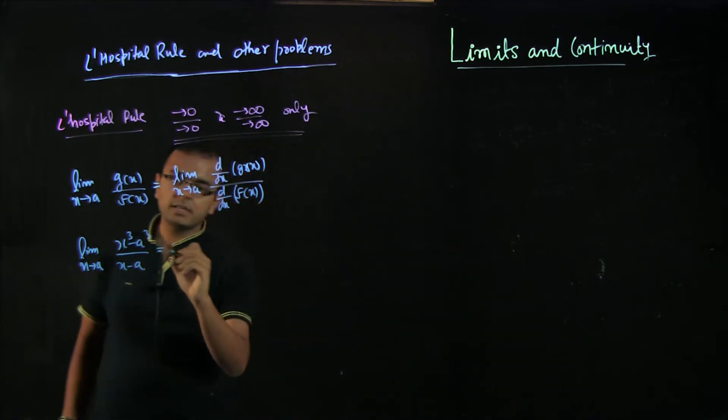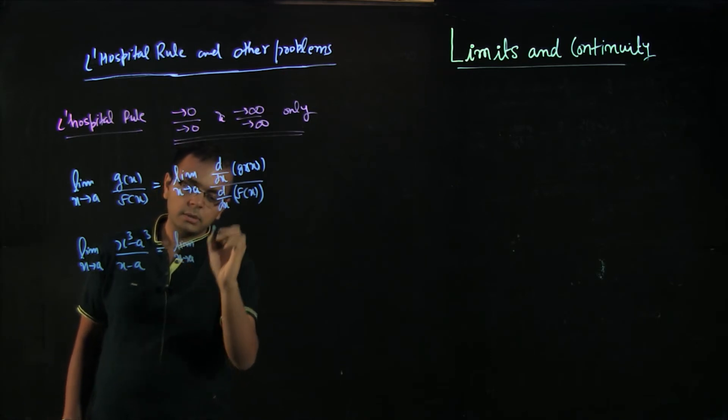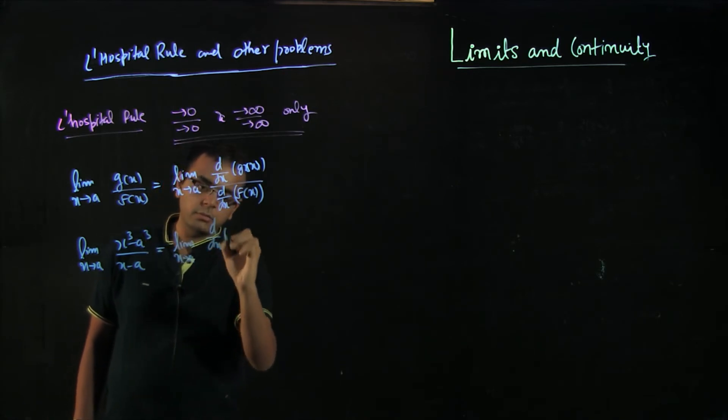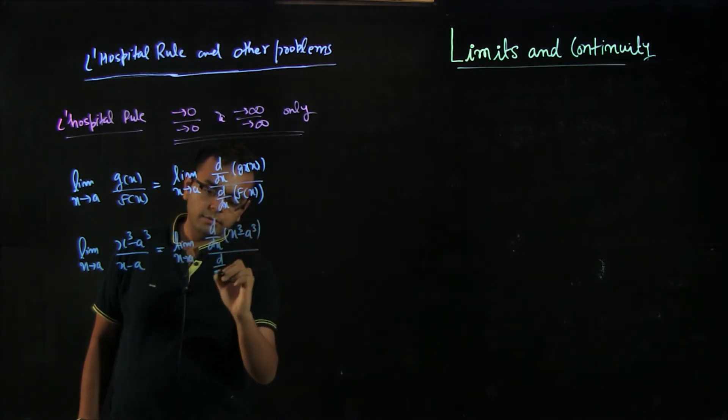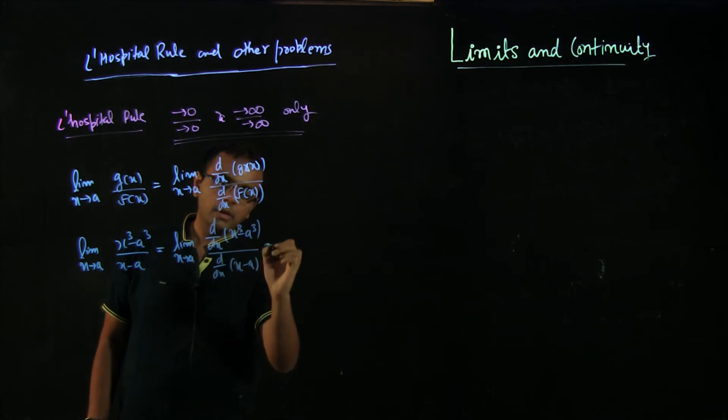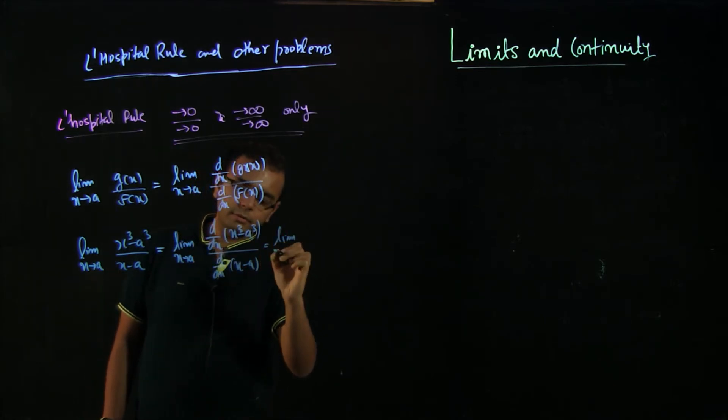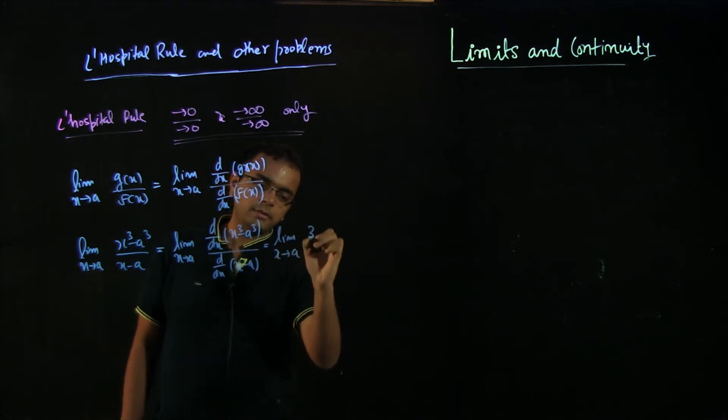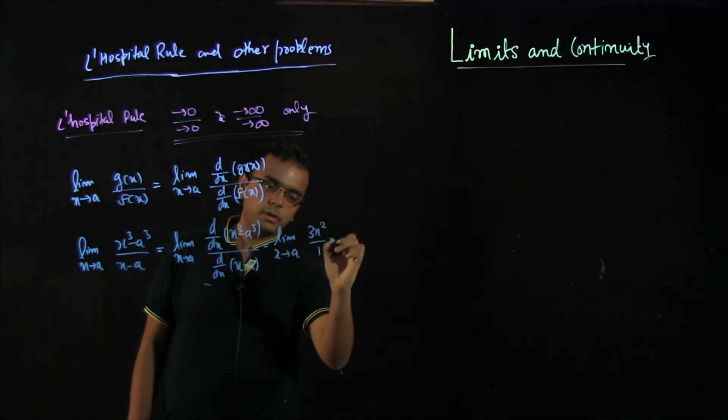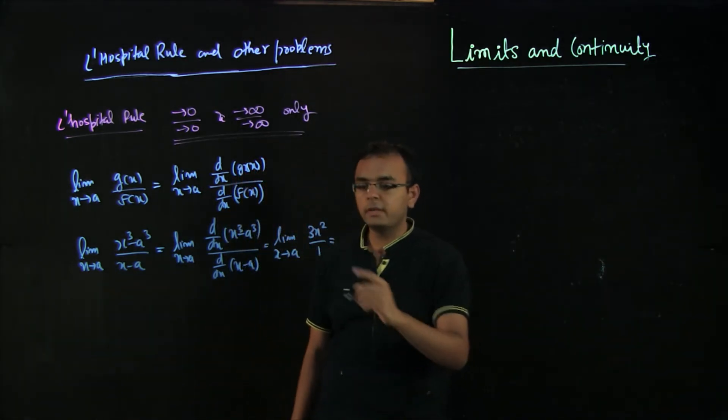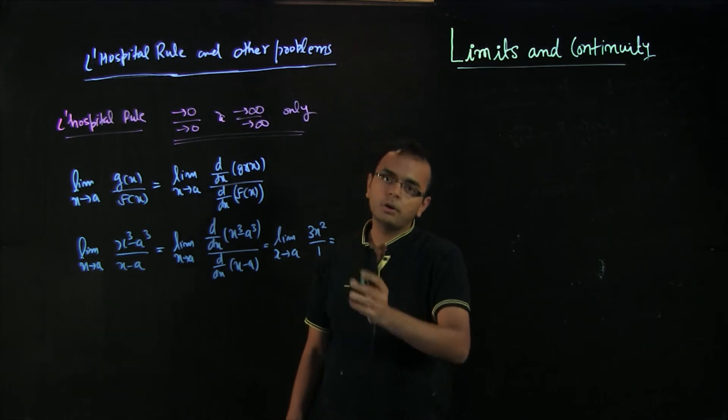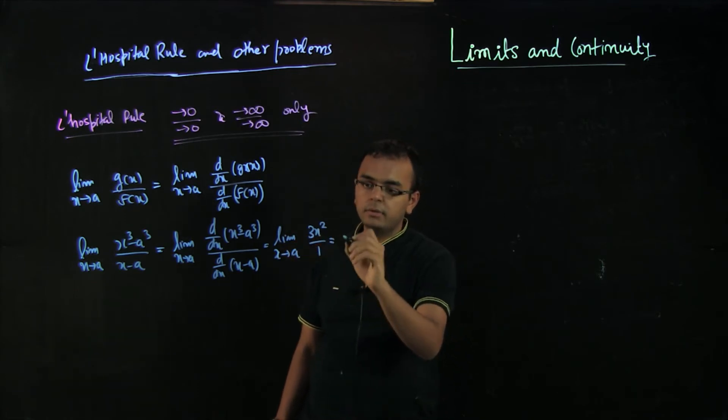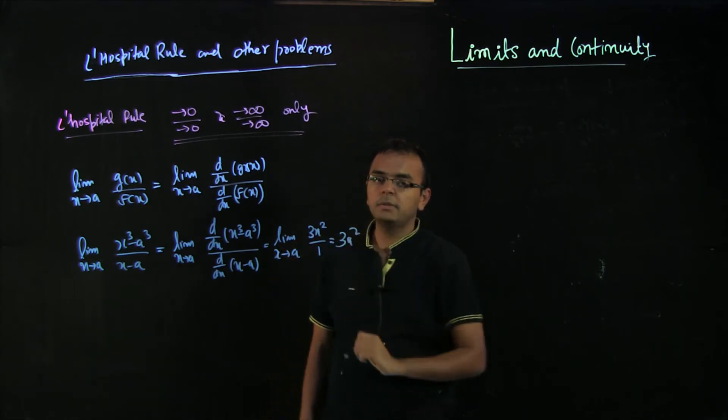We can write this as limit x tends to a, derivative of x cube minus a cube and derivative of x minus a. If you do derivative of these things, you will actually find that this becomes 3x square by 1. Again, you have to know about derivatives. Just understand that the derivatives are 3x square and 1. How to calculate that, you can look at the other videos, and hence the answer would directly be 3a square.